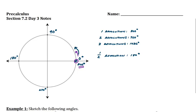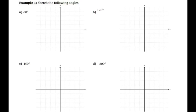Rotating around a circle counterclockwise is the positive direction, and we'll talk about what it means to rotate the other way in a little bit. For the first example, we're going to practice sketching some angles. For part A, if I want to sketch 60 degrees, I want to think of where 60 degrees would lie on the circle. If I put my vertex at (0, 0), 60 degrees would be somewhere between 0 and 90 degrees.